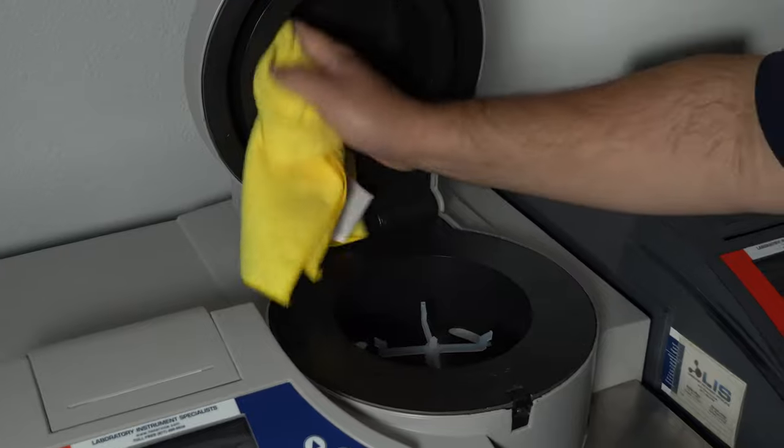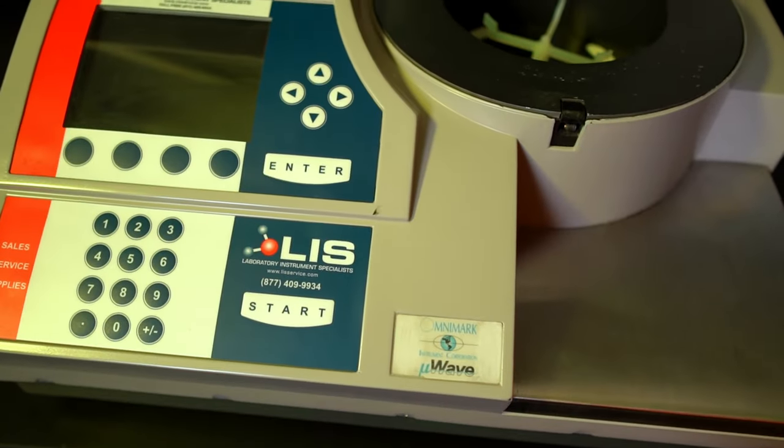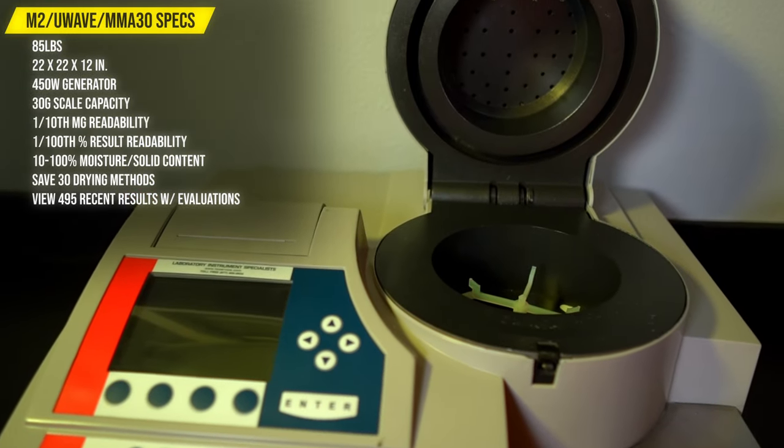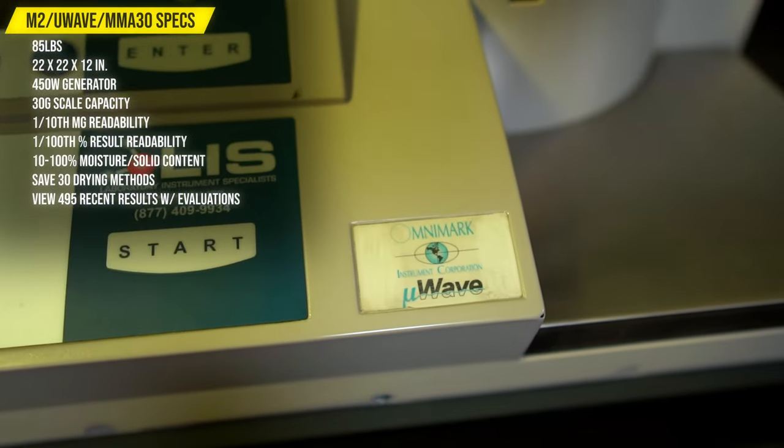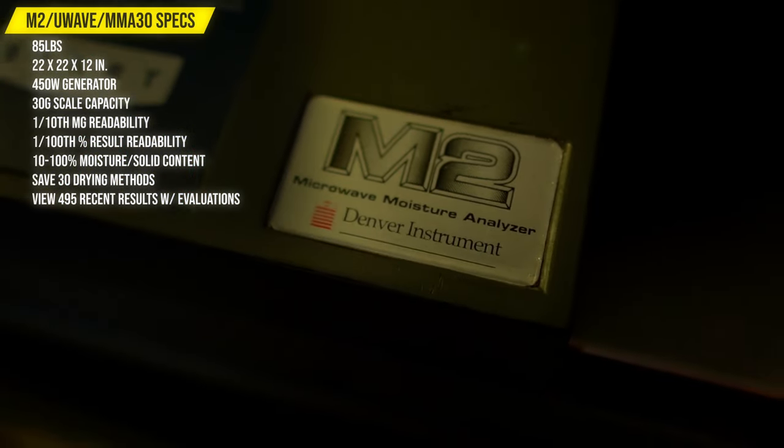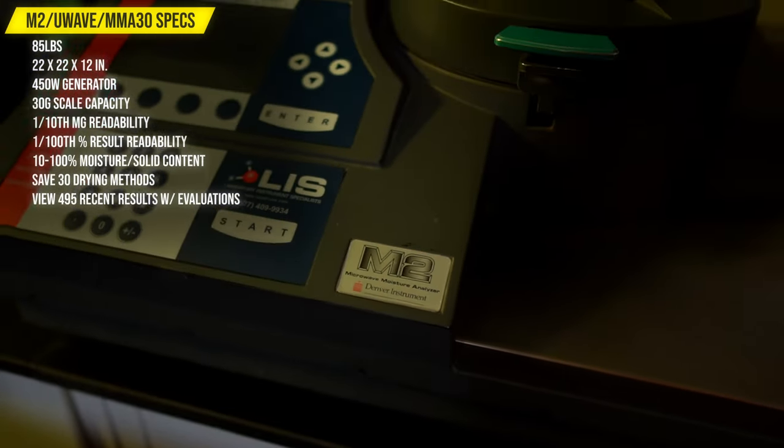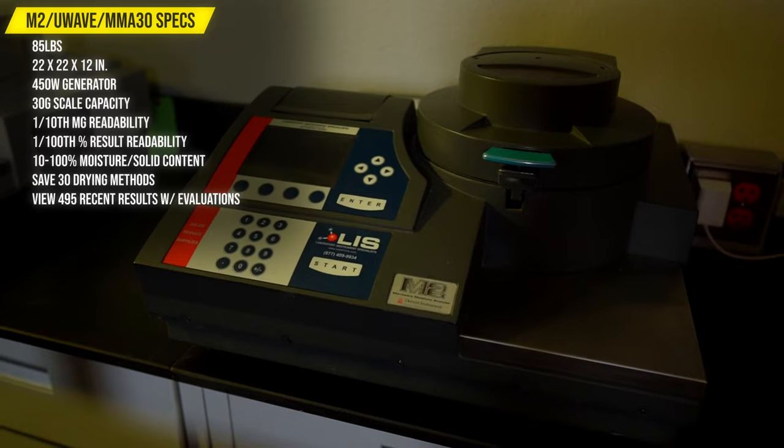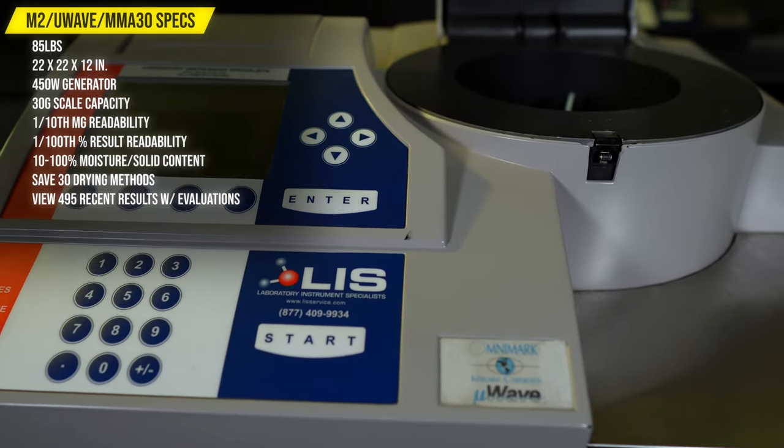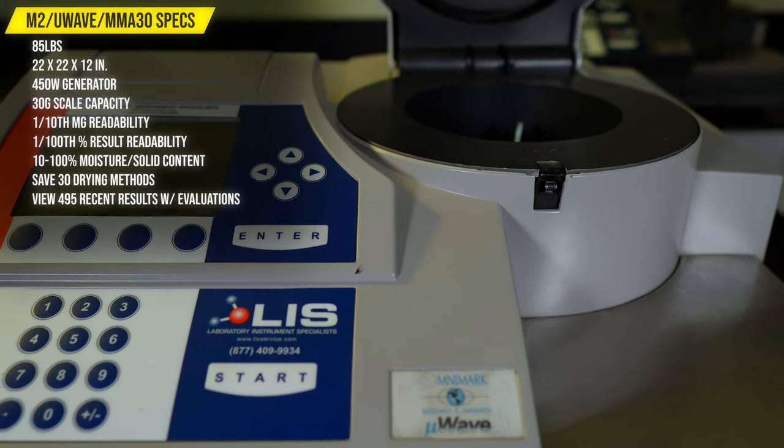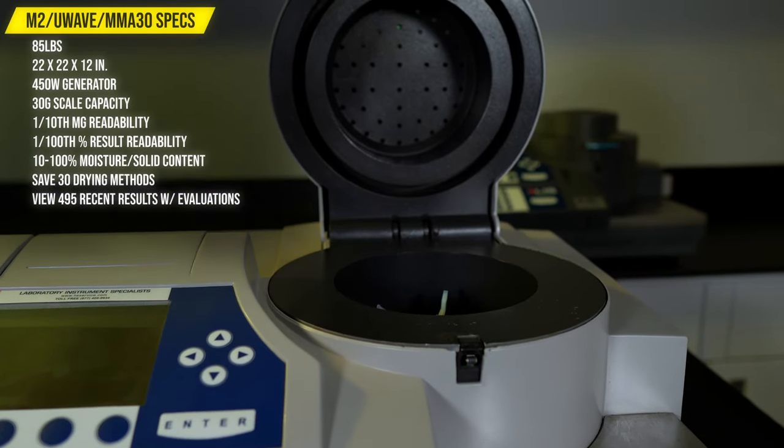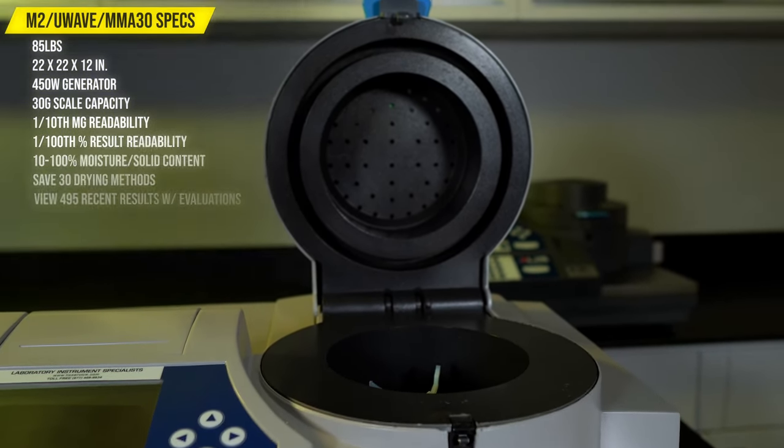Now, we'll go into a brief overview of these instruments. Both the M2 and the U-Wave have the exact same shape and size, weighing 85 pounds and measuring 22 by 22 by 12 inches. The instrument is heated by a 450-watt power generator. The maximum scale capacity is 30 grams with a readability of one-tenth of a milligram. Testing results have a readability of one-one-hundredth of a percentage while being able to determine between 10 to 100% of moisture or solid content. You can save up to 30 different drying processes and view 495 recent results with evaluations.